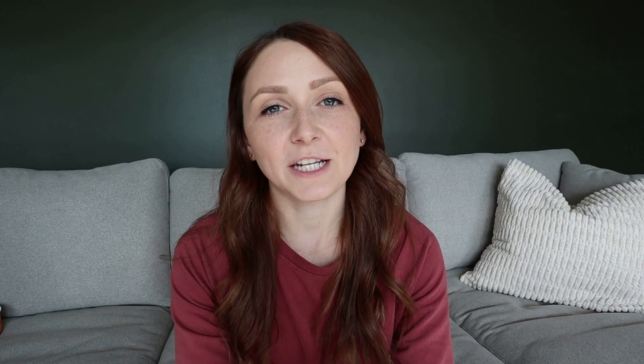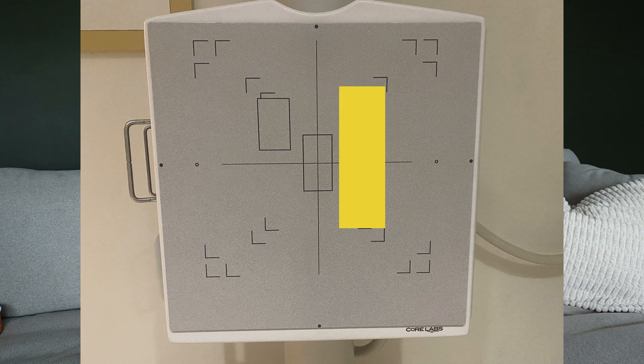Another factor that can affect AEC is proper positioning of the patient. If the part of the patient is not aligned with the selected photo cell, you're not telling that photo cell when the appropriate time is to shut off the exposure. For example, if you're doing a c-spine x-ray and the patient's spine is not aligned in front of the center cell on the bucky, that cell is going to receive too much radiation too quickly and will terminate the exposure, resulting in an underexposed image.